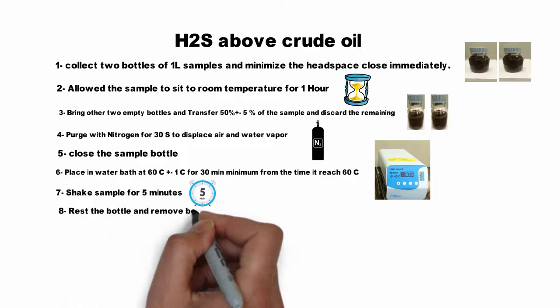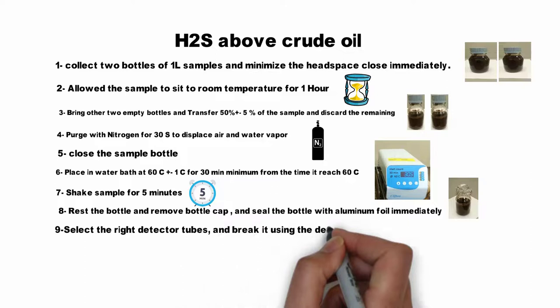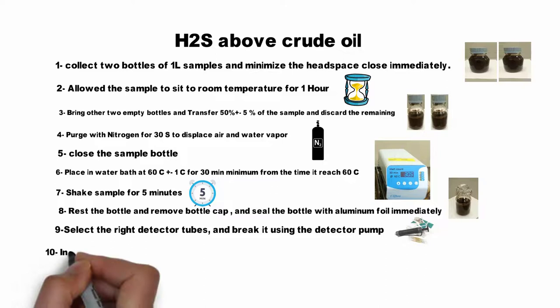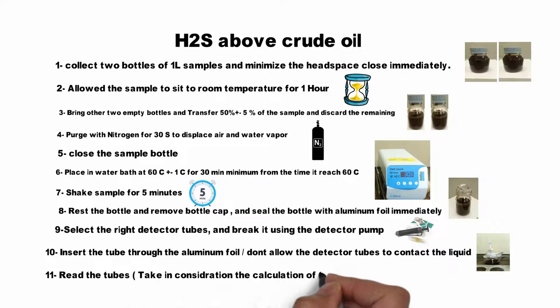Select the correct detector tubes and break them using the detector pump. Insert the tubes through the aluminum foil, taking care not to allow the detector tubes to contact the liquid phase. Read the tubes and take into consideration the stroke calculation — for example, full or half stroke.